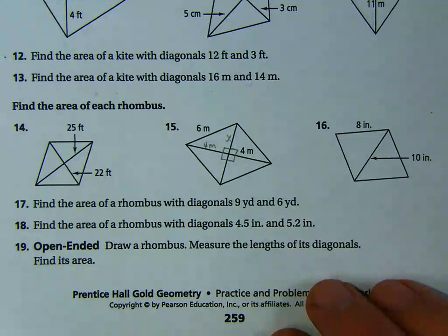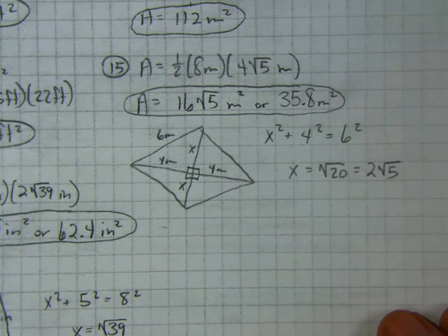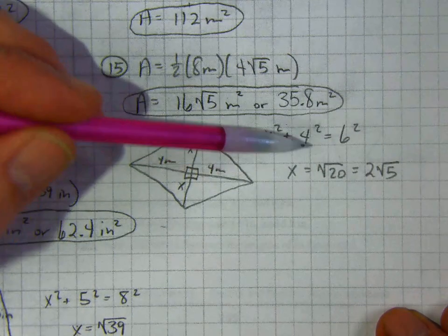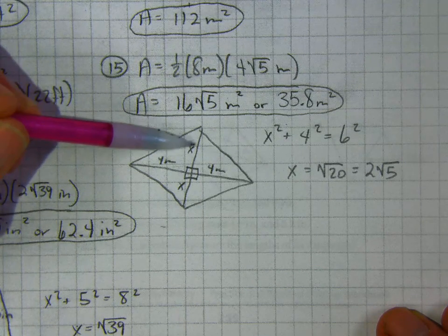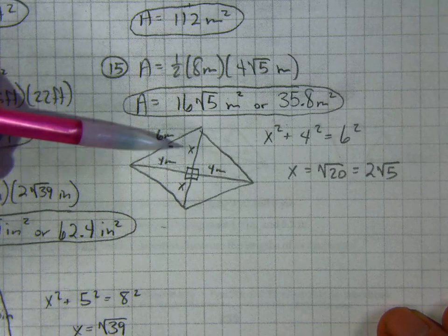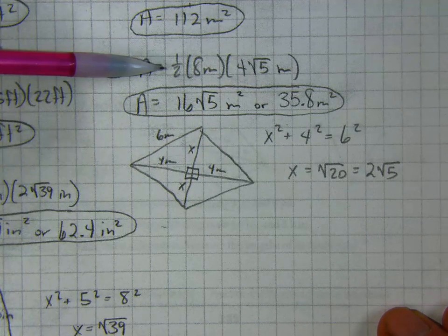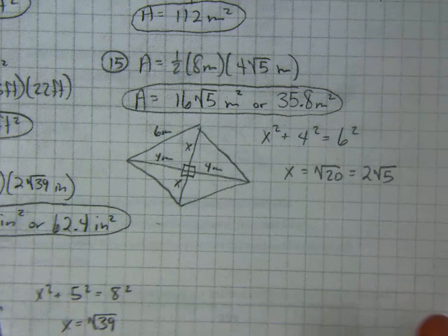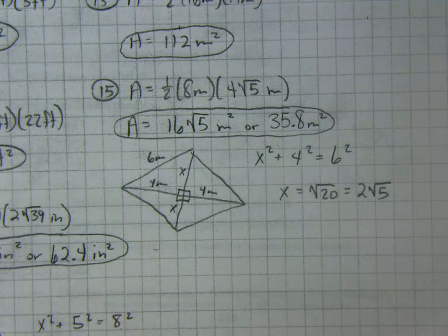Here's where I'd use the Pythagorean theorem. x squared plus 4 squared equals 6 squared. And I got x was 2 square roots of 5. So that means the diagonal, the whole thing, would be 4 square roots of 5. So this was 2 square roots of 5. This is 2 square roots of 5. So this diagonal is 8. This diagonal is 4 square roots of 5. So 8 times 4 square roots of 5 divided by 2 was 16 square roots of 5 meters squared, or 35.8 meters squared. This section did not say you had to leave your answer in radical form, so that's why I went ahead and changed it to 35.8 meters squared.